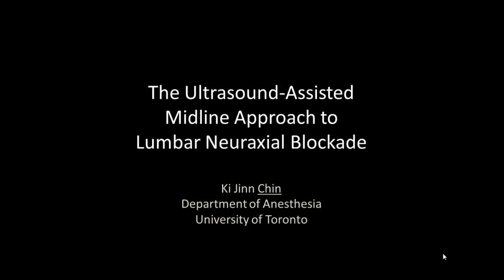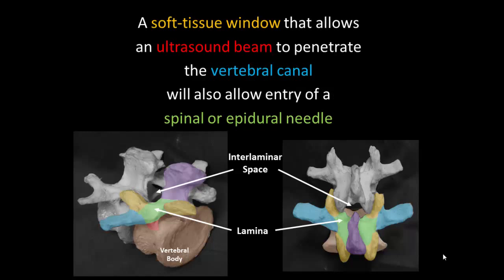The following video describes the ultrasound-assisted midline approach to lumbar central neuraxial blockade. The use of ultrasound to guide spinal and epidural anesthesia is based upon the principle that if the ultrasound beam can penetrate the vertebral canal to provide an image of its contents, then likewise a needle will also be able to enter the canal.